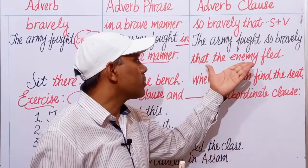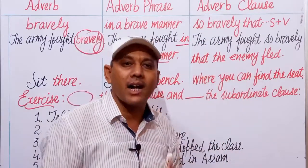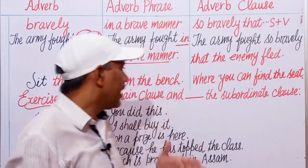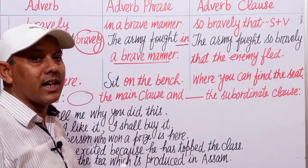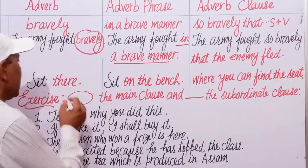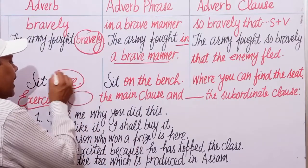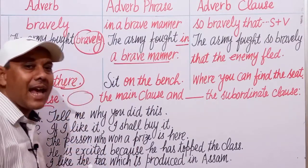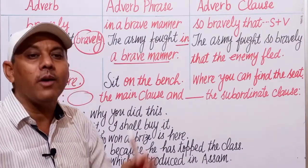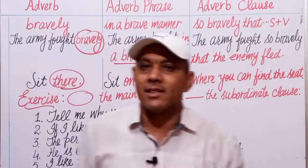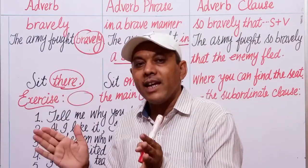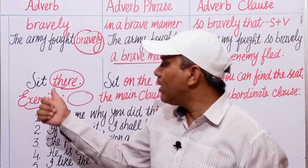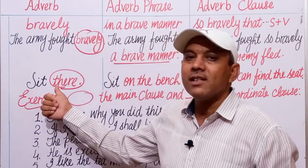Next example: 'Sit there.' The word 'there' is an adverb of place — a single word acting as an adverb in this sentence. Here the subject 'you' is hidden.